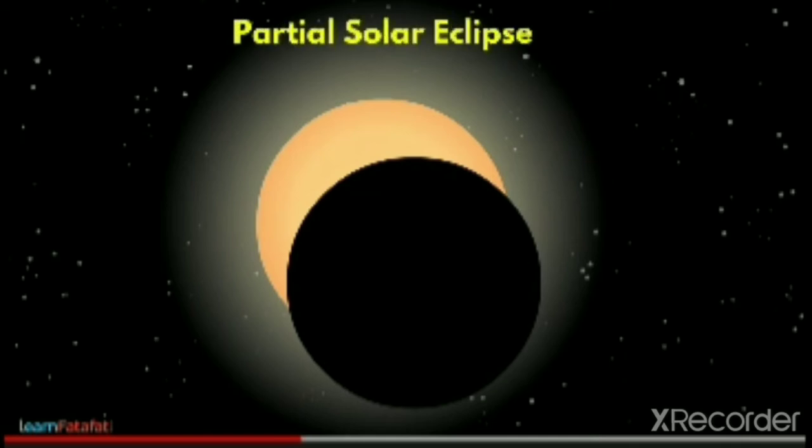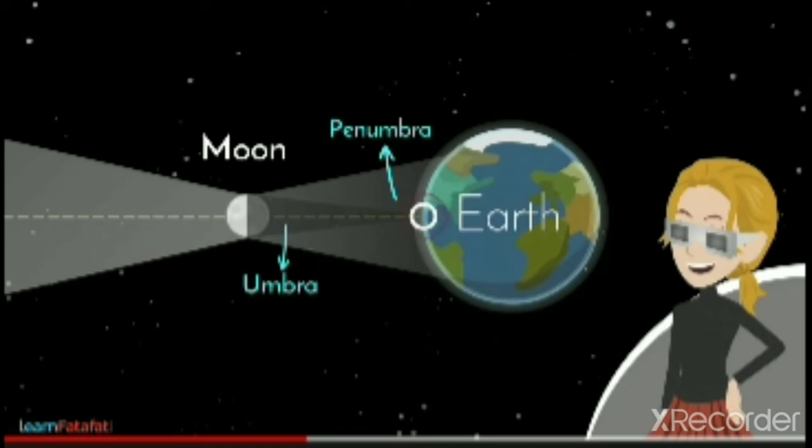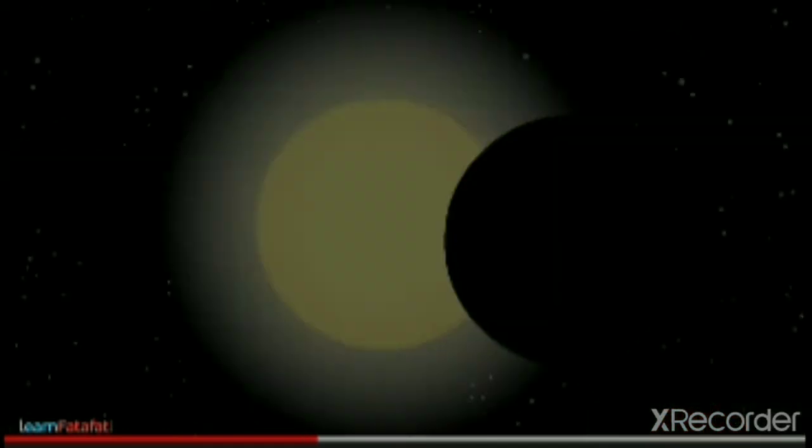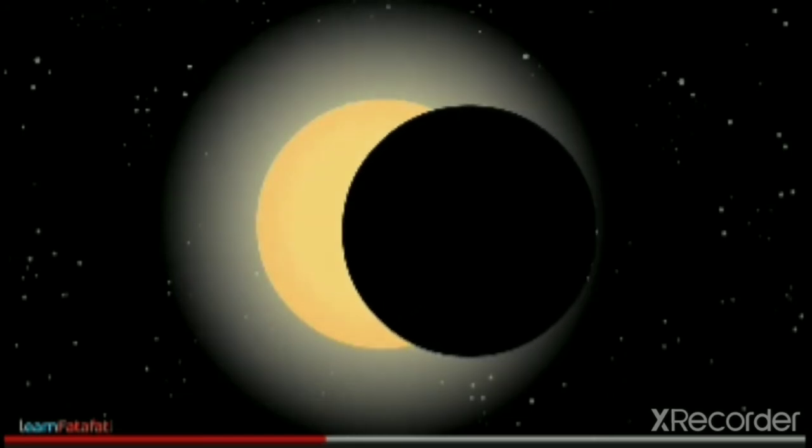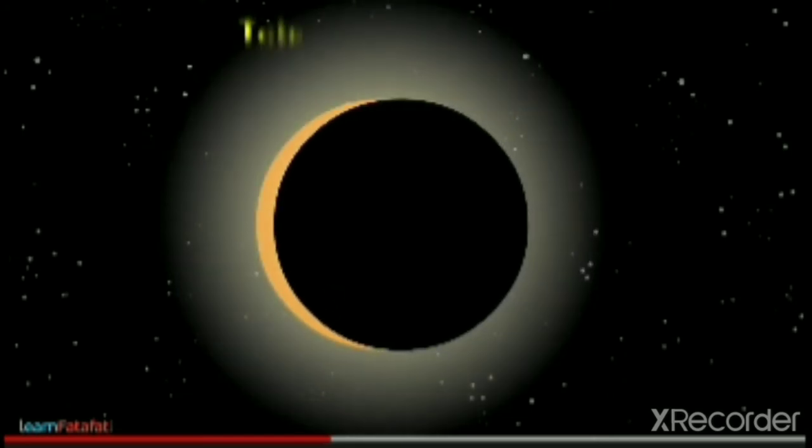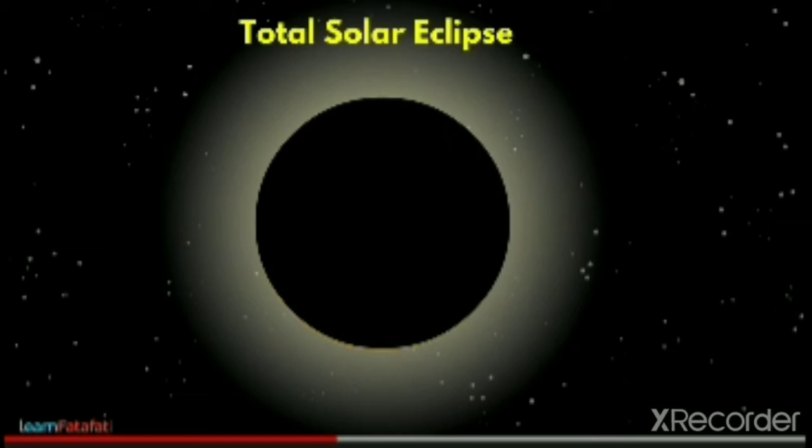But if you stand in the umbra region, you will see that the sun is completely hidden by the moon. This is called a total solar eclipse.